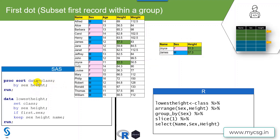In SAS, we just need to sort the dataset based on the variables of interest. Within each sex group I am sorting by ascending values of height, so within females the lowest height is 51.3 and that record comes first, and within males 57.3 is the lowest height and comes first. Then I use the subsetting if statement — if first.sex — so only the first record of each group, which holds a value of 1 for first.sex, gets written to the output dataset.